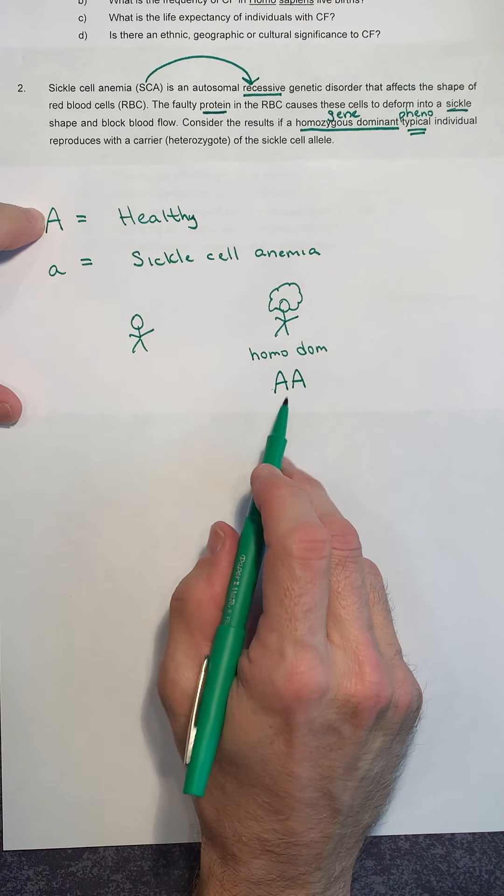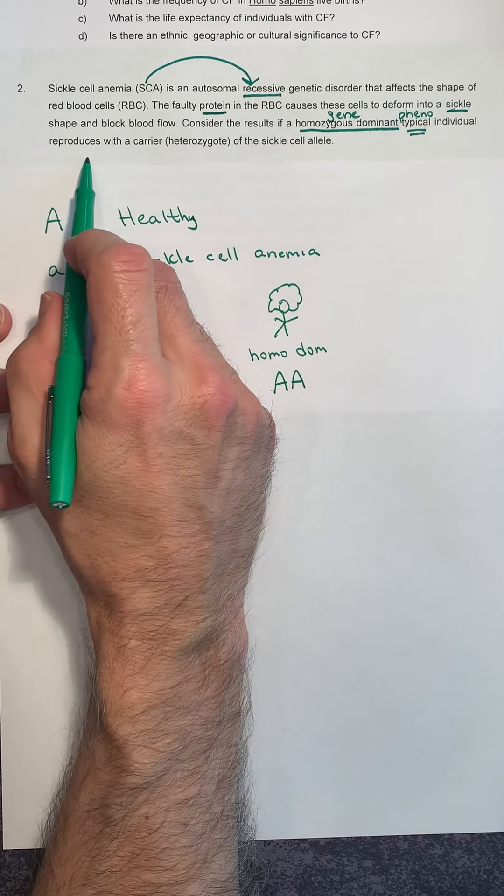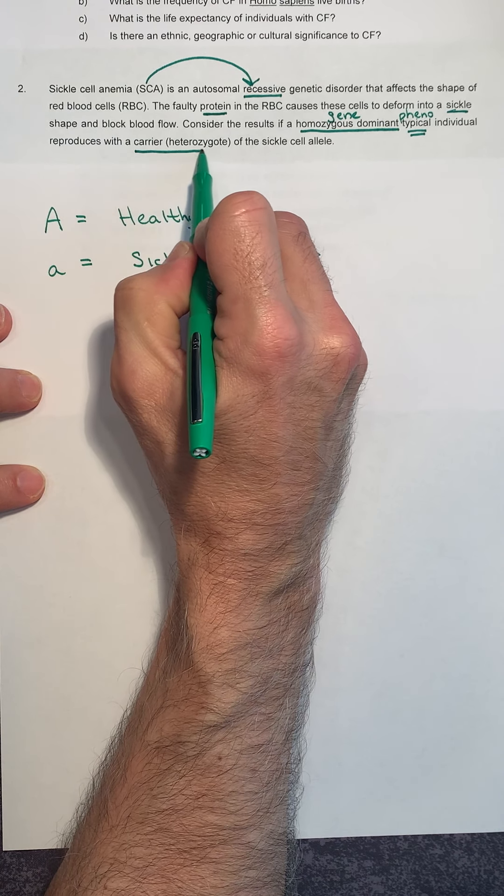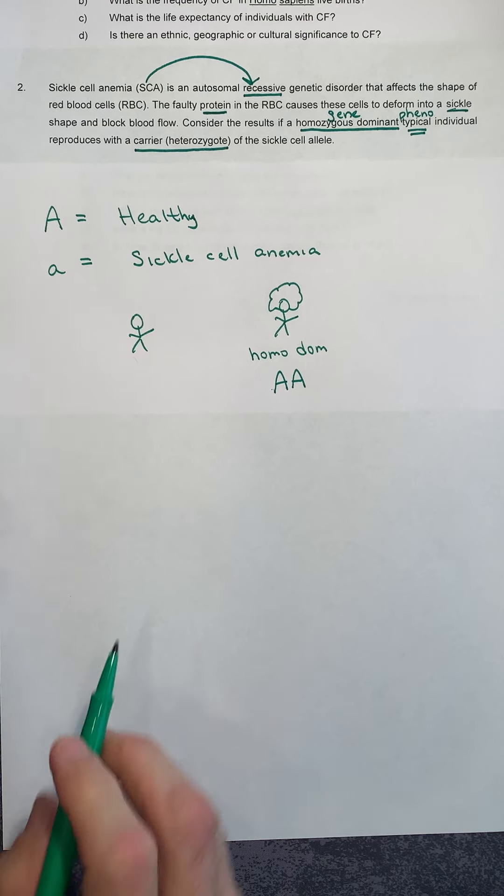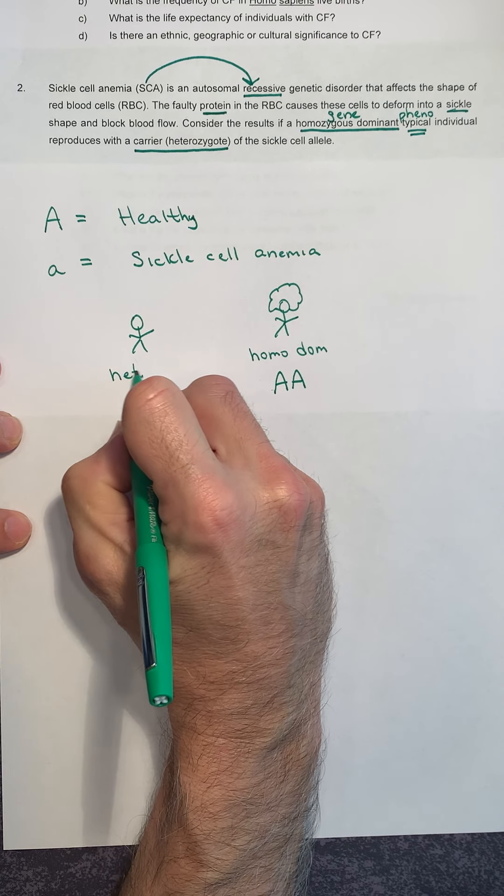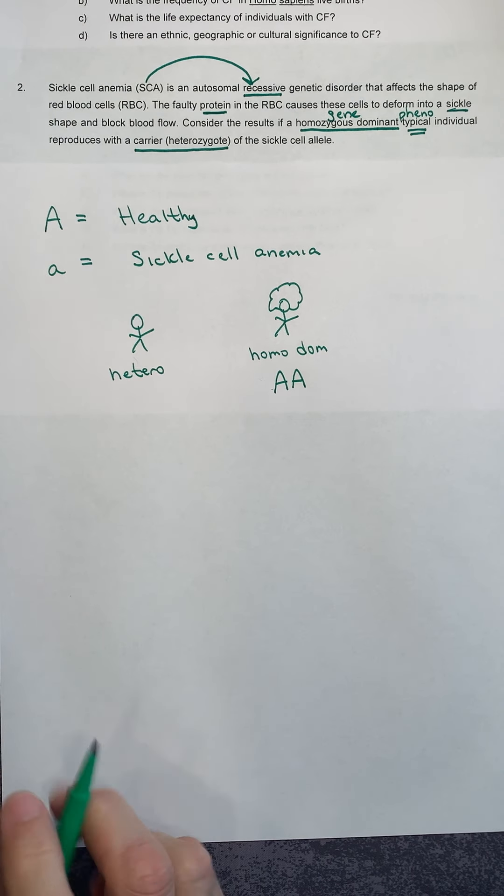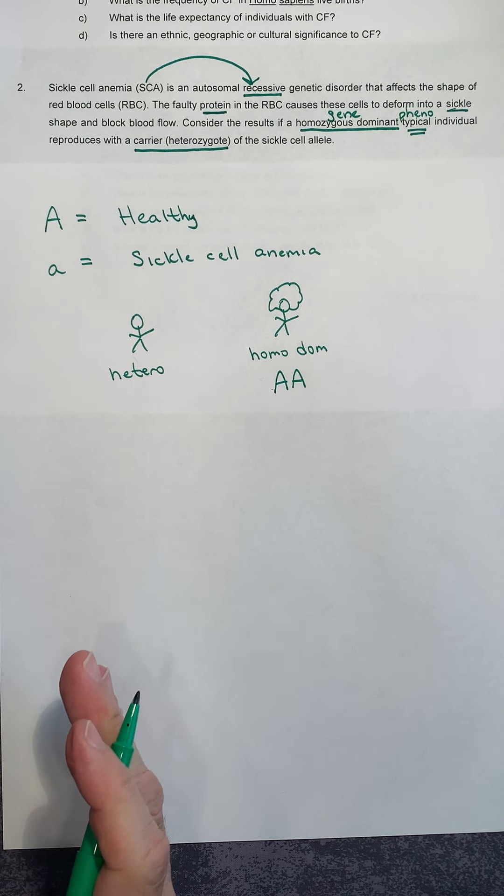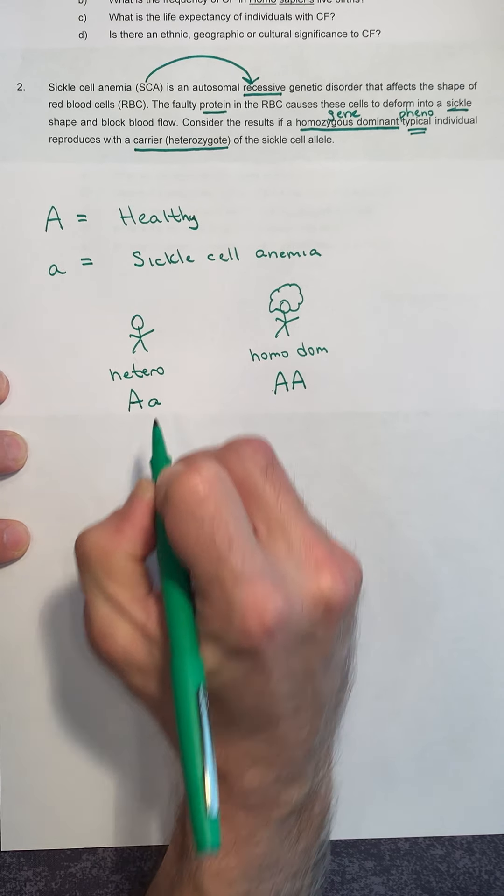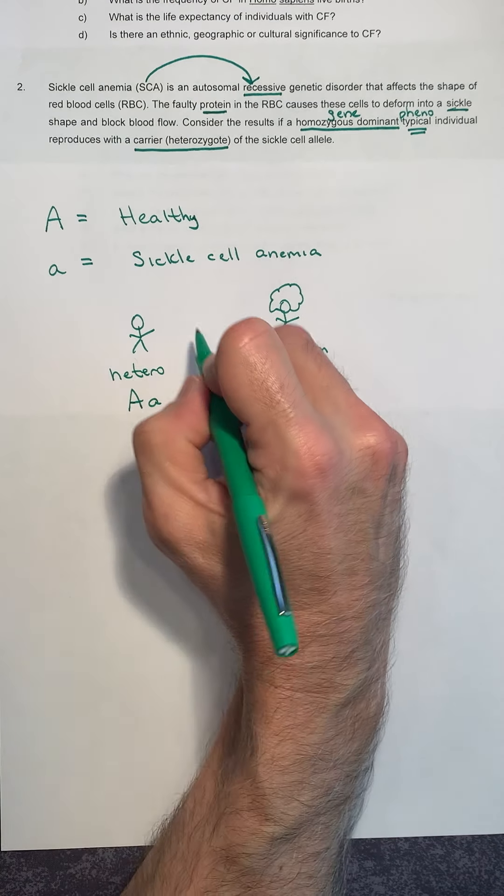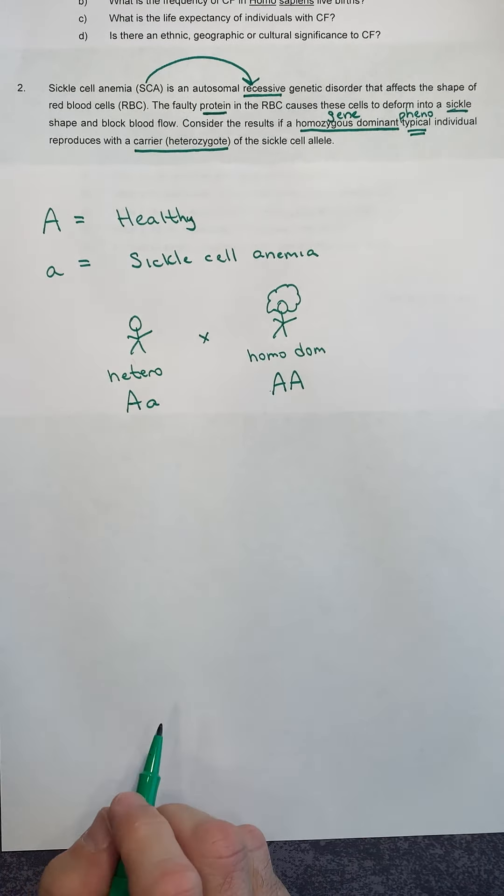Let's take a look at her partner. It says that this homozygous dominant, typical individual reproduces with a carrier. He's a heterozygote. So he's a heterozygote. Hetero, different, zygote pair. So he has a different pair. His alleles are different. He's big A, little a. And this is our cross. So that's step three.